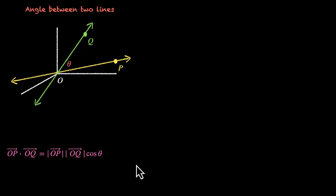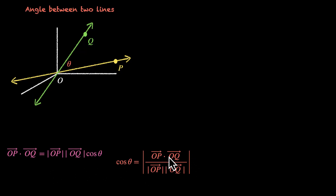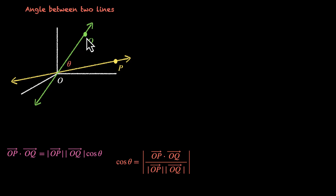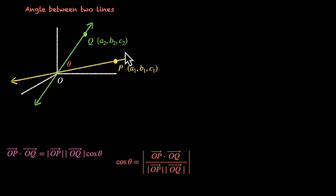We use the dot product of these two vectors, OP vector and OQ vector. This is mod of OP vector times mod of OQ vector times cos of theta. We rearrange this and get cos of theta equals the mod of the dot product divided by the product of their magnitudes. So this is how we can get the angle between these two vectors. And if you know these points — if point P is (A1, B1, C1) and Q is (A2, B2, C2) — we have these two vectors, OP vector and OQ vector.